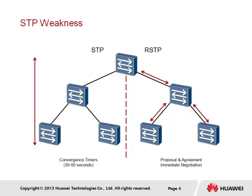The main goal of RSTP is to tackle this problem of slow convergence time and provides an effective solution through the removal of reliance on timer mechanisms within the spanning tree, applying a method known as proposal and agreement that allows a network to converge through a negotiation process that originates from a root bridge and cascades segment by segment through the network until all switches are in agreement.